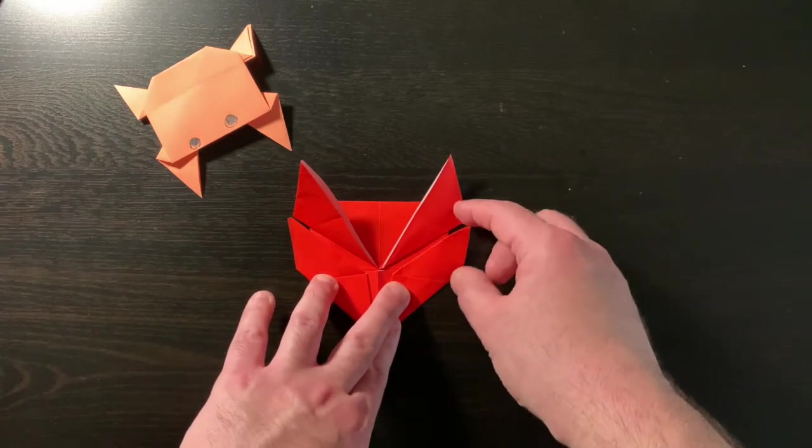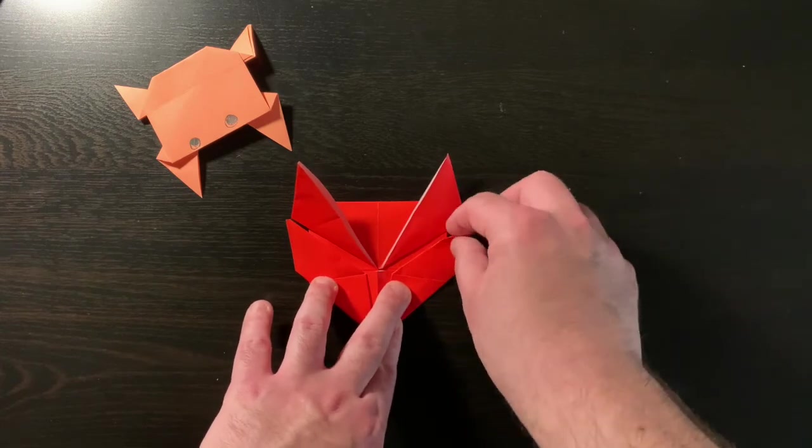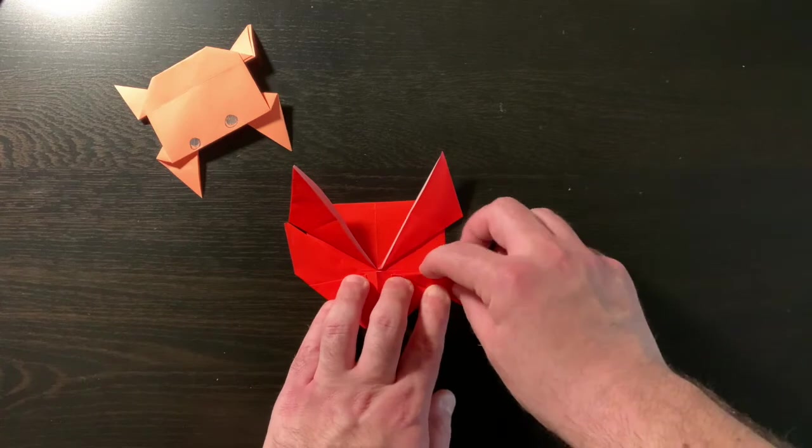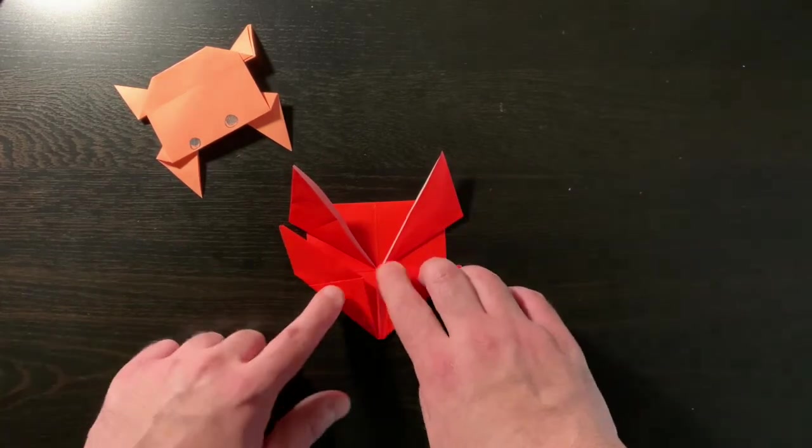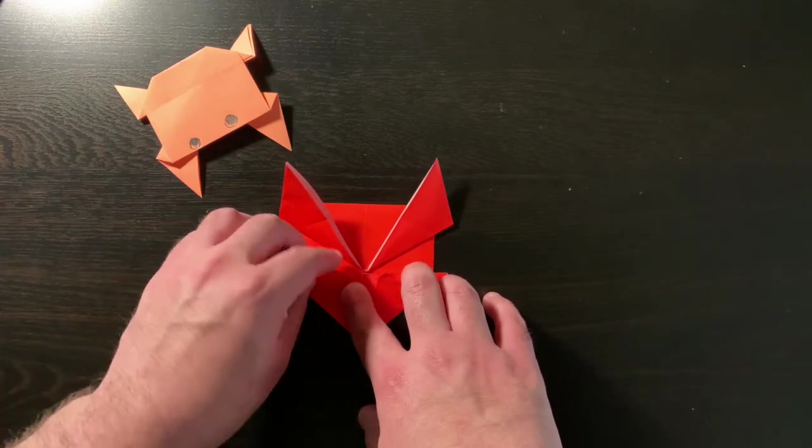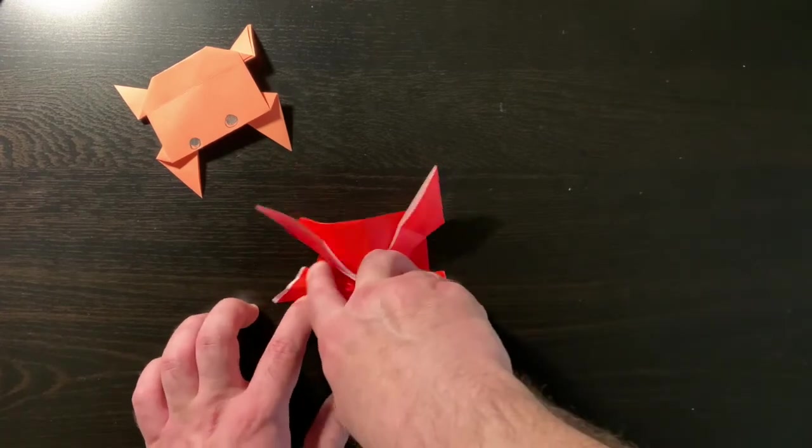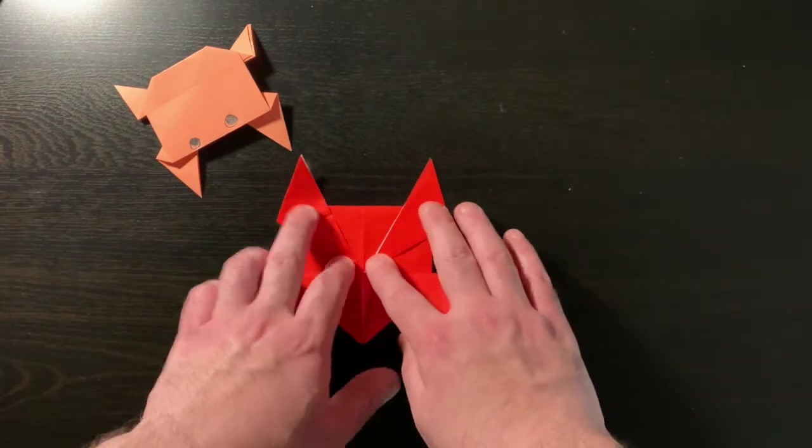So let's take this top flap corner on our right. Let's first bring this down. We're going to fold it down and make it nice and even. Same thing with this one on the other side. Let's take the left side and bring that down, make it nice and even.